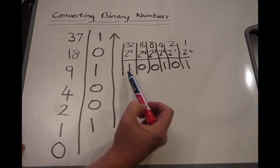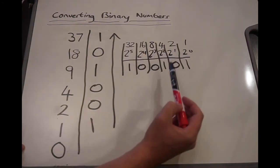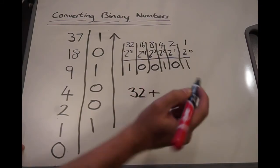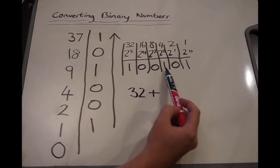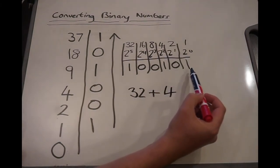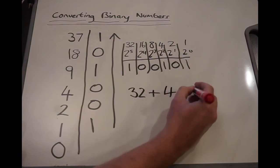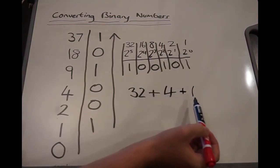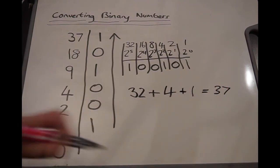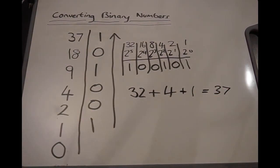So what we're going to do is we've got 1, 32. We've got 1, 4, and we've got 1, 1. And if we add 32 plus 4 plus 1, we get 37. So that is the dividing by 2 algorithm to calculate, to convert a denary number into binary.